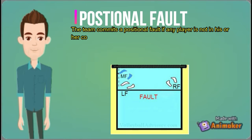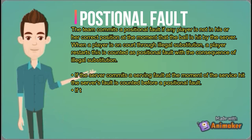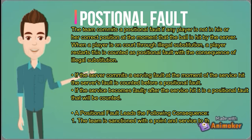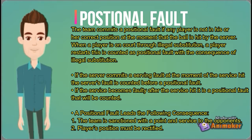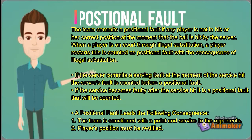Positional fault. The team commits a positional fault if any player is not in his or her correct position at the moment the ball is hit by the server. When a player is on court through illegal substitution, this is accounted as a positional fault with the consequence of illegal substitution. If the server commits a serving fault at the moment of the service hit, the serving fault is counted before a positional fault. If the service becomes faulty after the service hit, the positional fault will be counted. A positional fault leads to the following consequences: 1. The team is sanctioned with a point and service to the opponent. 2. The player's position must be rectified.